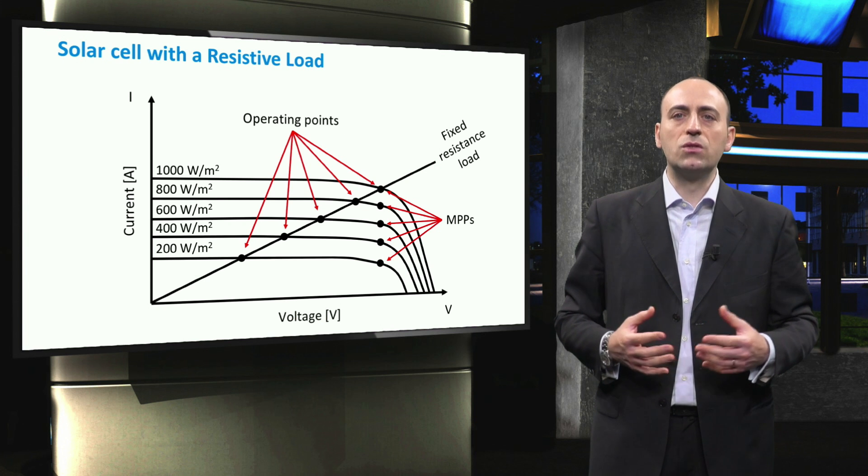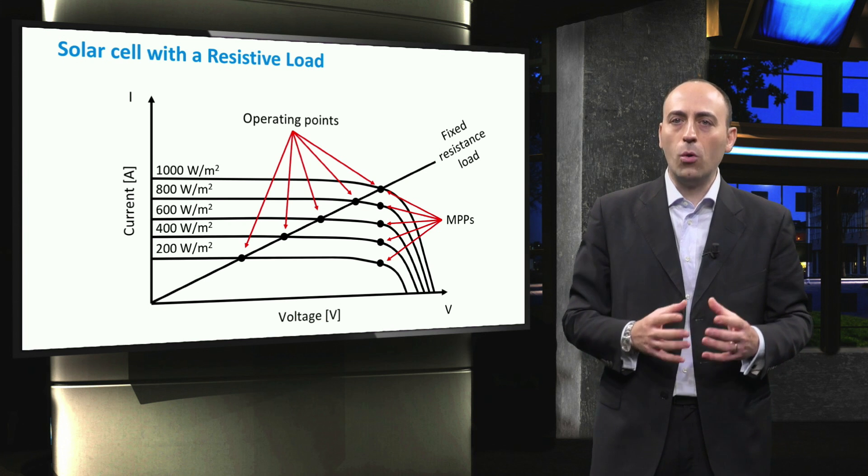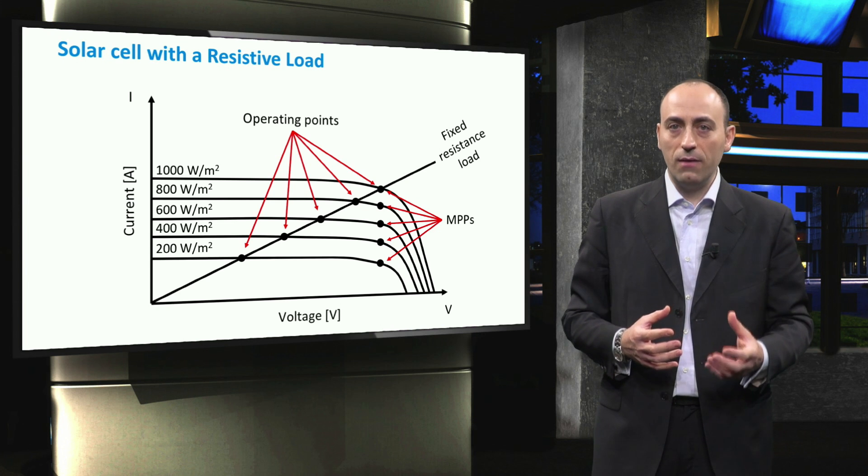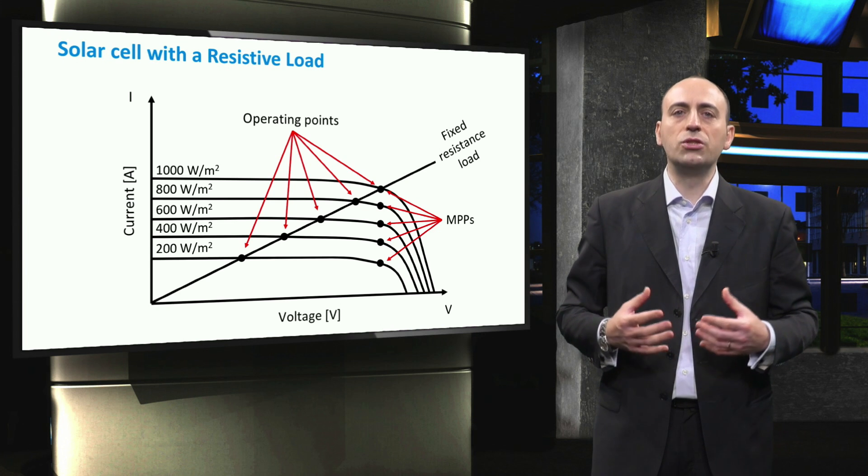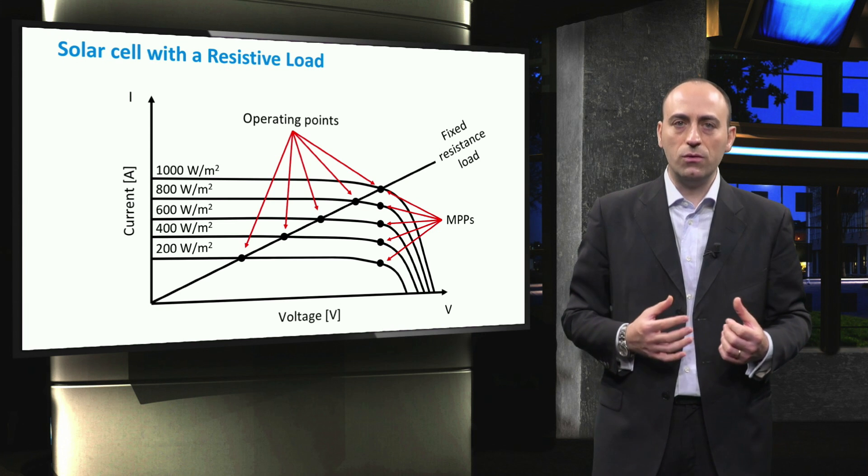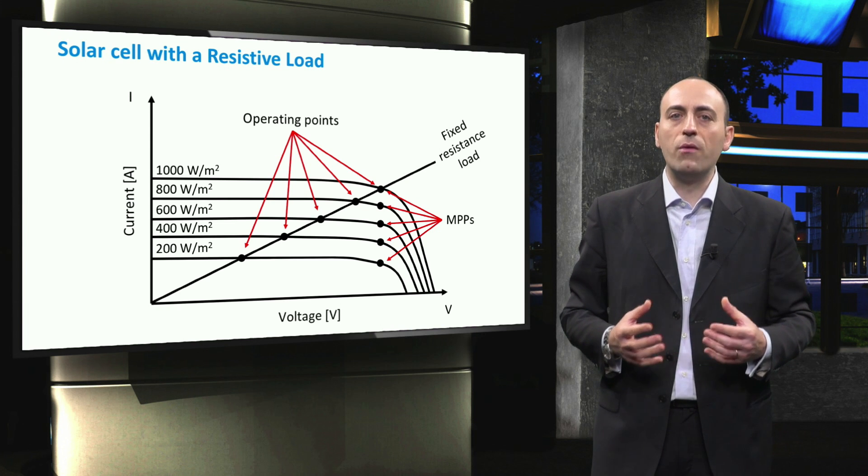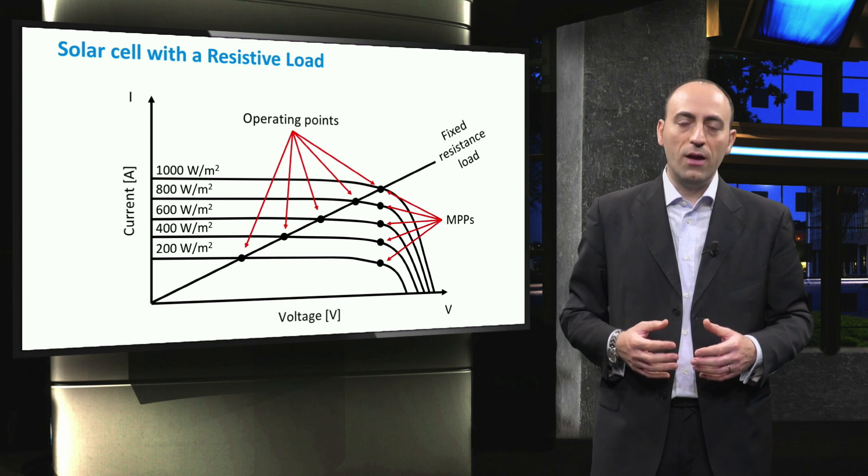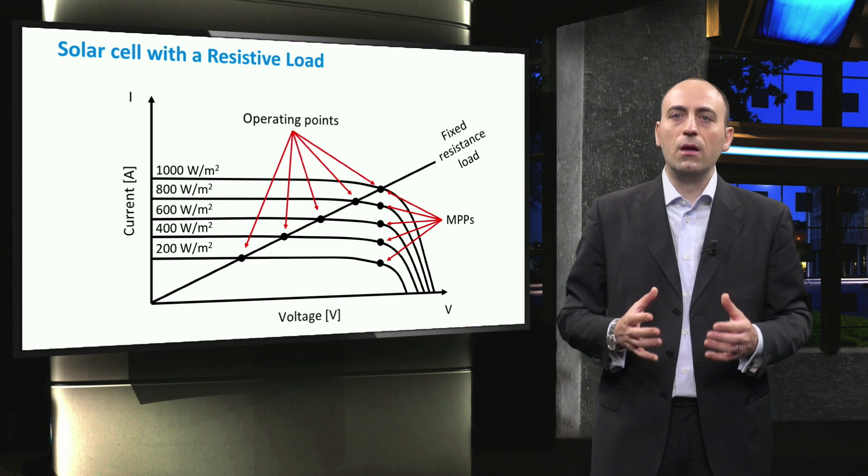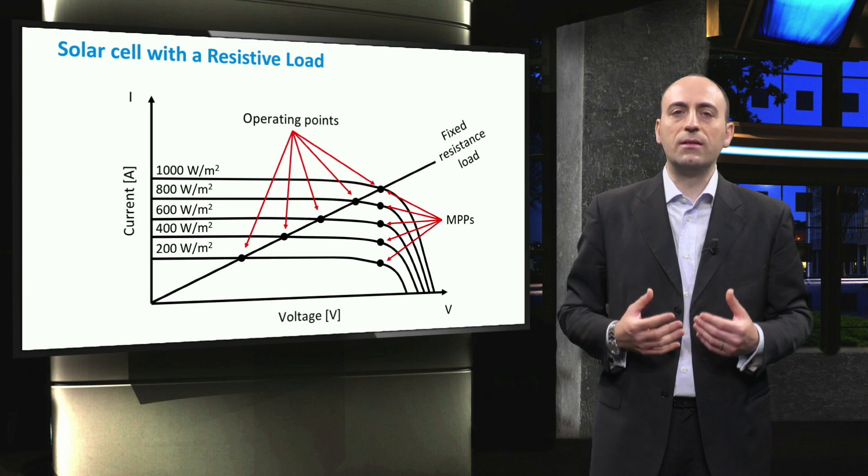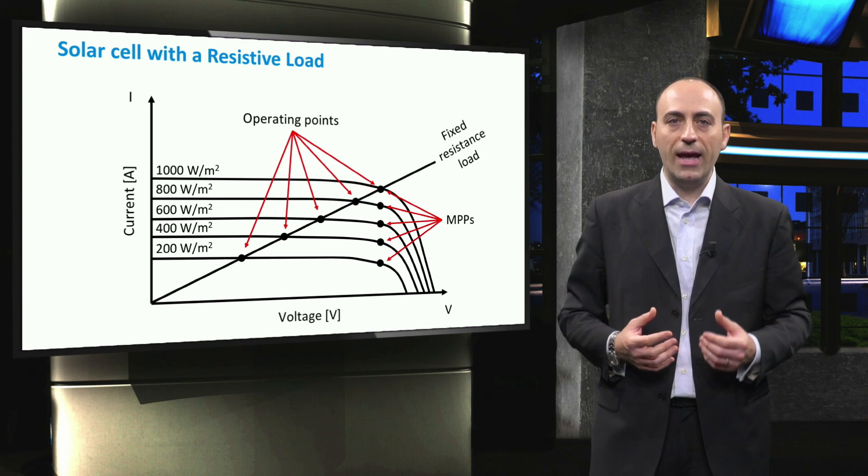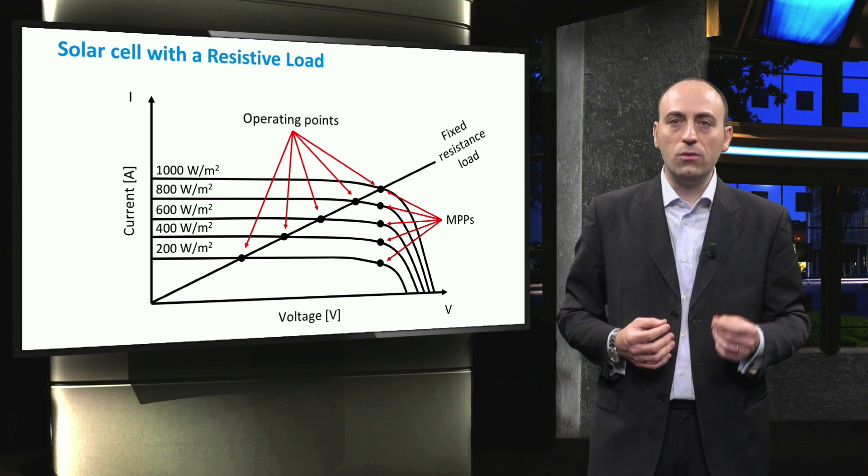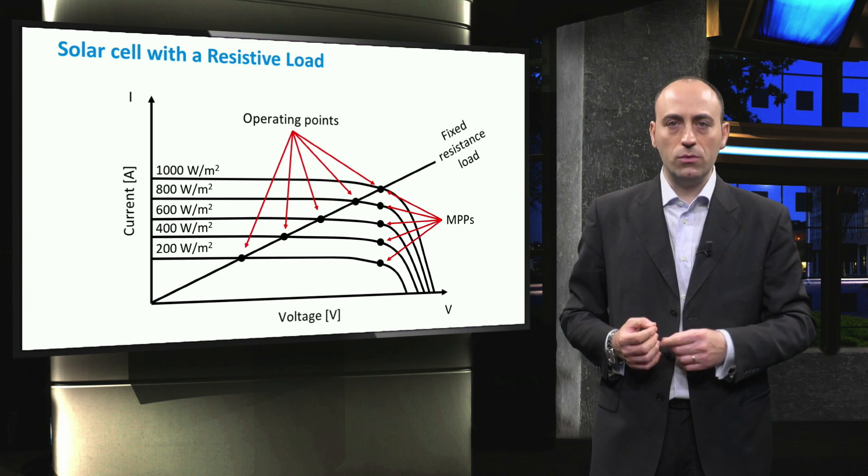In this case, the solar module can only contribute a portion of the actual available power. In other words, depending on which resistance or load is attached to the PV panel, we have different operating points. Therefore, it is very important that the PV panel is always at the maximum power point of the module and, at the same time, that it also delivers maximum power to the load.